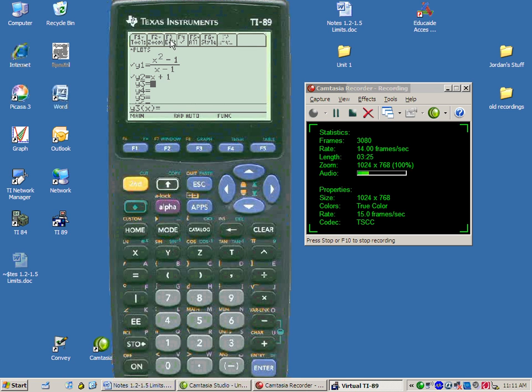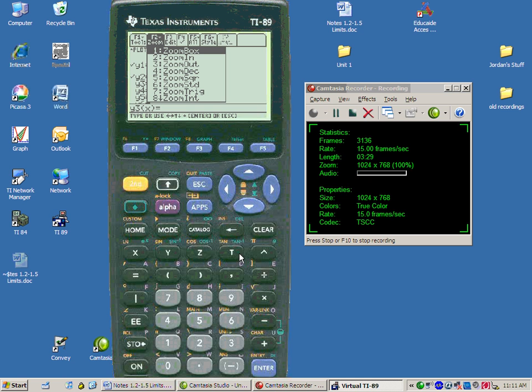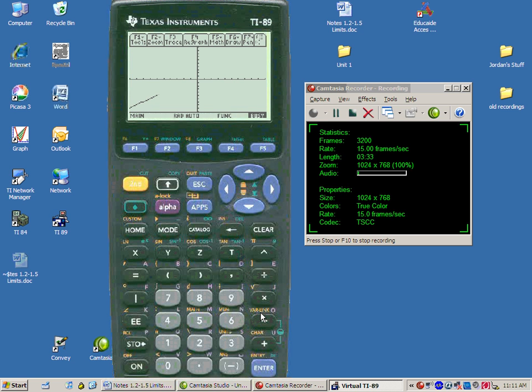So if you're in your y equals, under F2 are all your zoom features. And zoom 6 is still your standard window. Alright, now I put two equations into y equals, but I'm only seeing one graph. They're the same, exactly the same? How are they going to differ? Good, one of them has a hole. You're a step ahead of me.